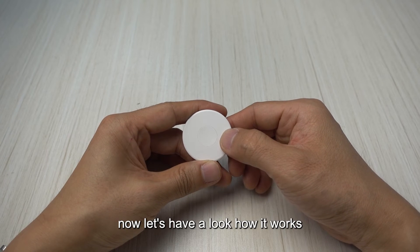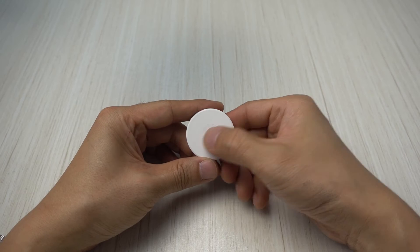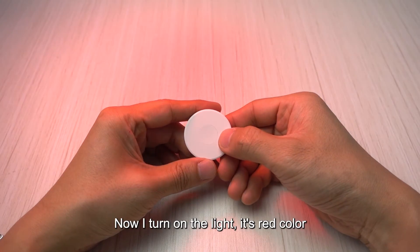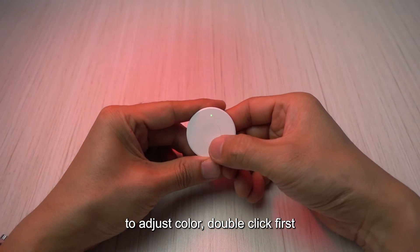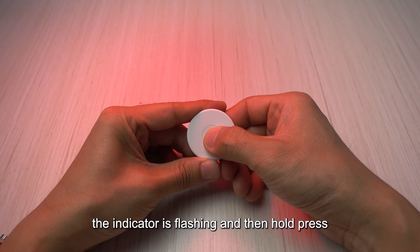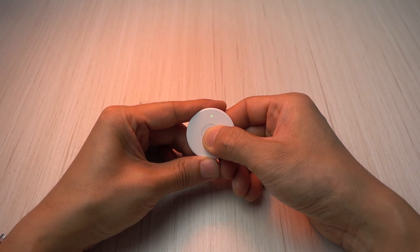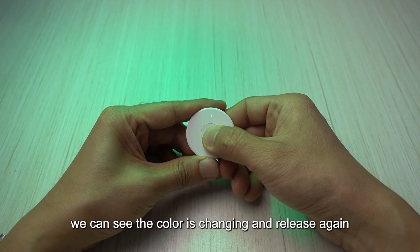Now let's have a look how it works. Now I turn on the light, it's red color. To adjust the color double click first, the indicator flashing and then hold press. So we can see the color is changing.